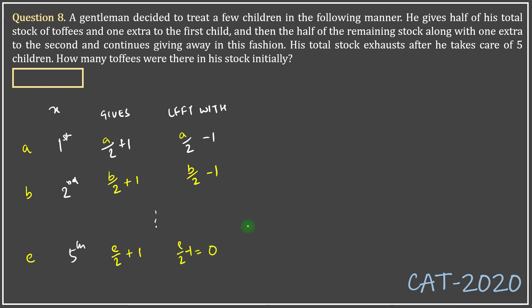So given that e/2 minus 1 is 0, e is equal to 2. Given that in the previous case, d/2 minus 1 would be the number of chocolates left with which he starts the fifth round, so d/2 minus 1 is e which is 2. So I solve: d/2 minus 1 is 2, or d is equal to 6.